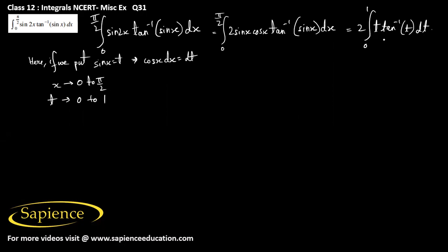We apply integration by parts using the ILATE rule — Inverse, Logarithmic, Algebraic, Trigonometric, Exponential. Since we have an inverse trigonometric function and an algebraic function, we choose tan⁻¹(t) as the first function and t as the second function. Let this integral be I.